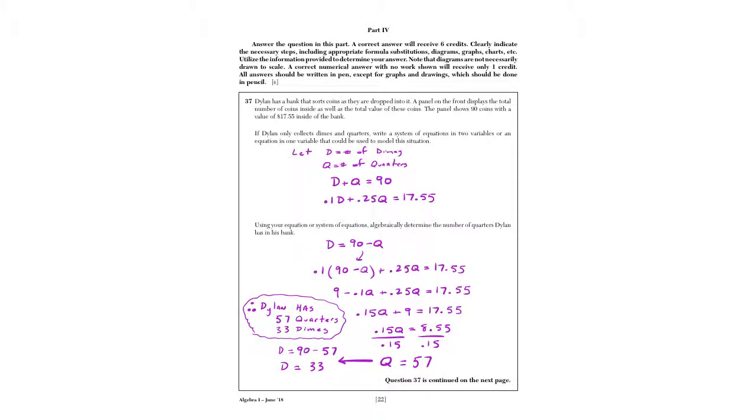And last question on the June 2018 Regents, question 37. This is a six-pointer. It actually has three parts. I actually found this is one of the easier last questions, one of the easier number 37s, if you will, in the past few years that I've seen. This is a system, which it traditionally is, and a coin system, if that.